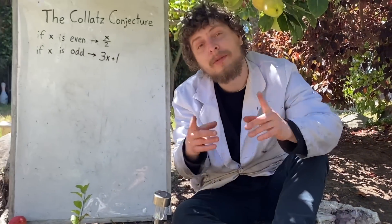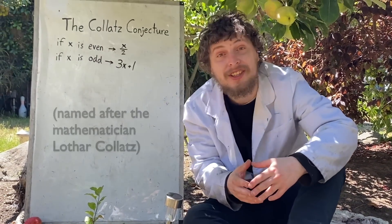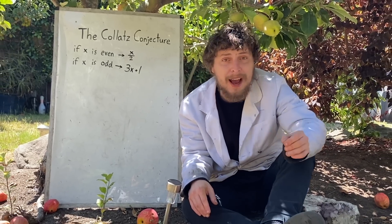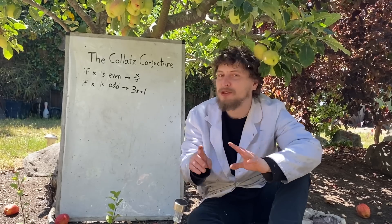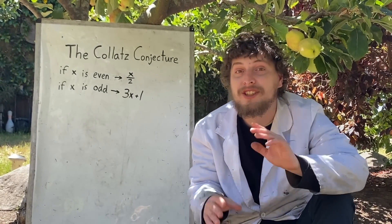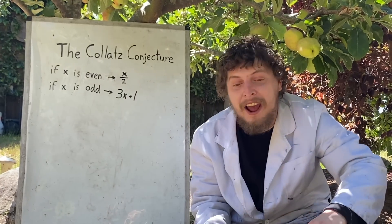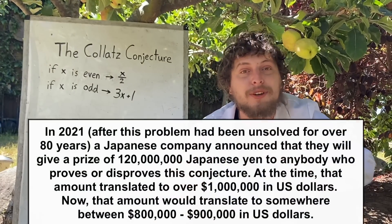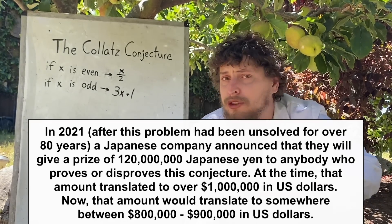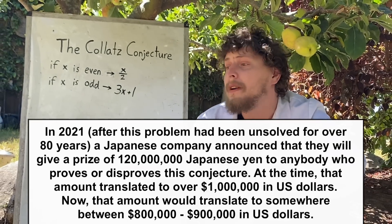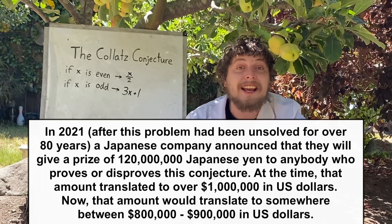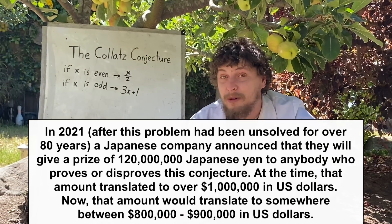The Collatz conjecture, sometimes pronounced Collatz, is one of the simplest unsolved questions in mathematics. Many people have tried to solve this thing with no success yet, and if anyone does prove or disprove it, there's a prize of 120 million yen — a foreign currency — that once translated to over 1 million dollars, currently worth somewhere between 800 and 900 thousand dollars.